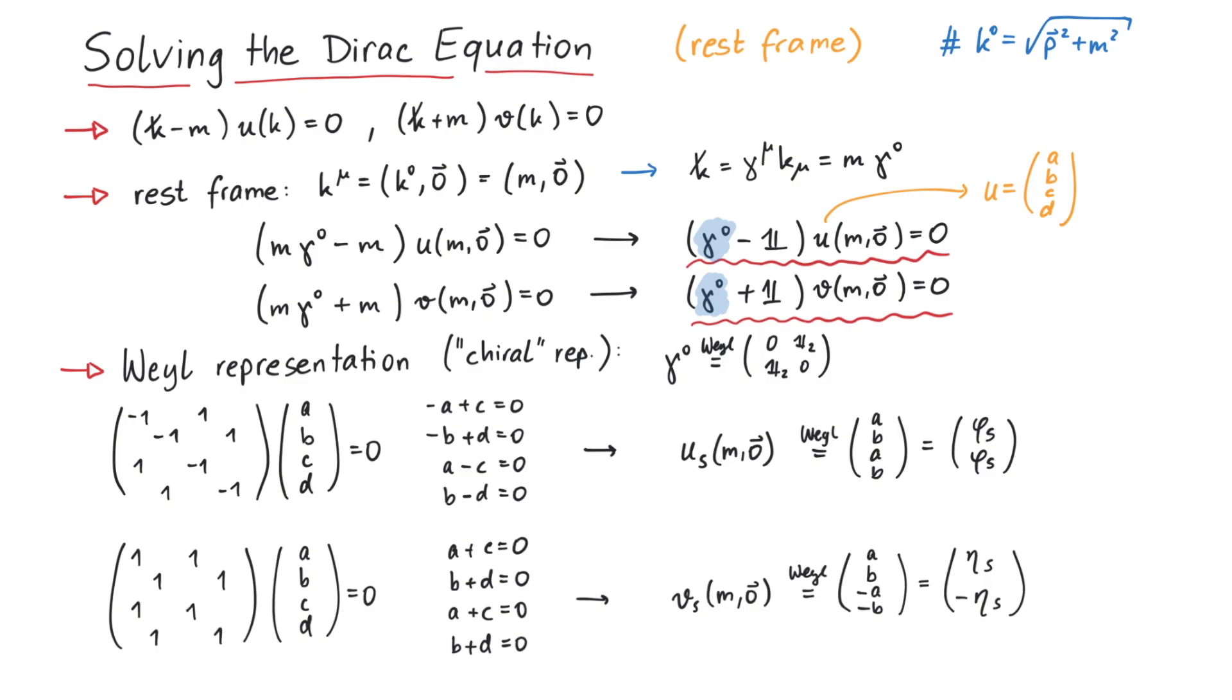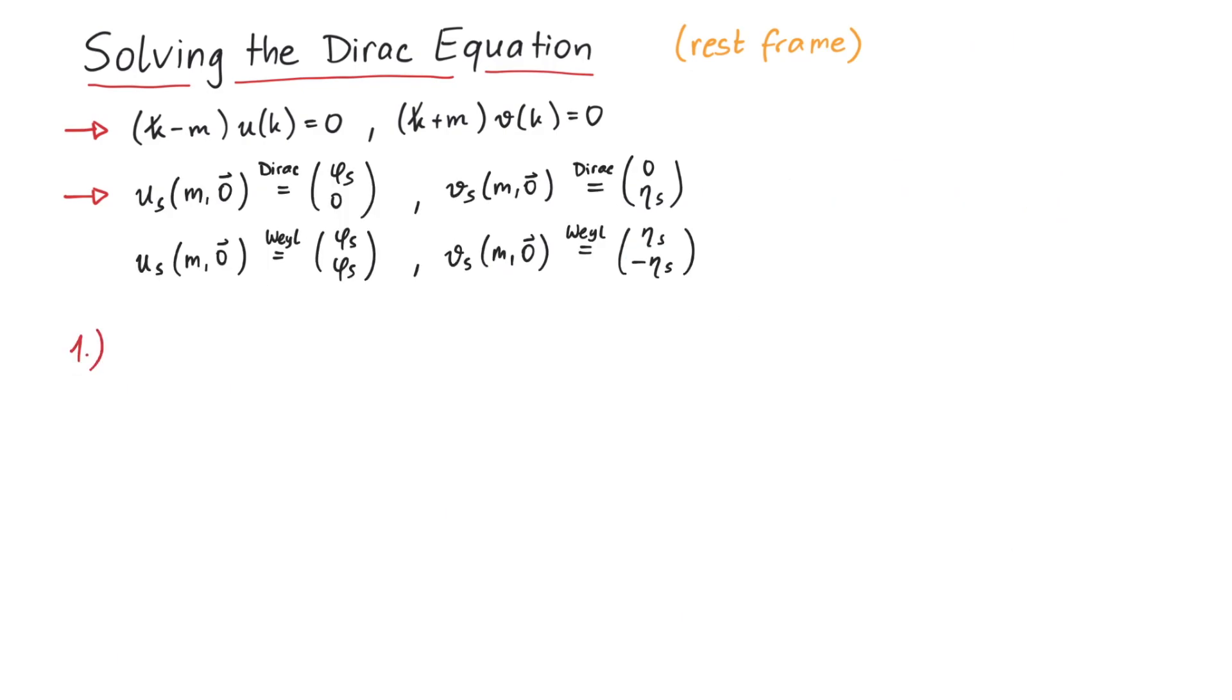Before we end this video, here are three important points. First, be careful about the notation. It might be confusing at first, but be sure to know the difference between Dirac and Weyl spinners and Dirac and Weyl representations. Second, independent of the representation of the gamma matrices, we always have two degrees of freedom, expressed by the choice of s equals 1 or 2. This is because the Dirac equation describes a spin one-half particle, which can have spin up or spin down.